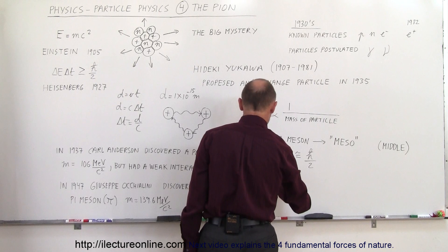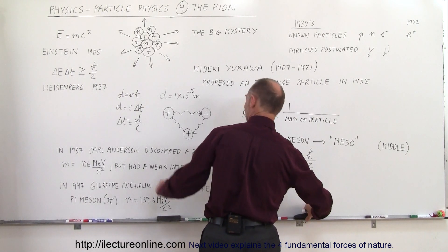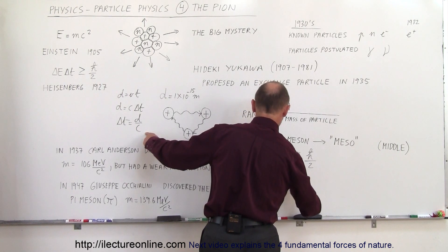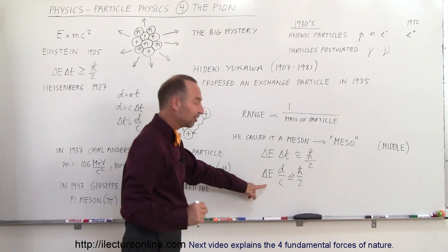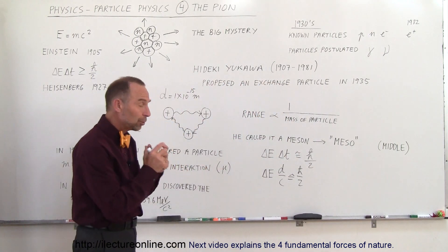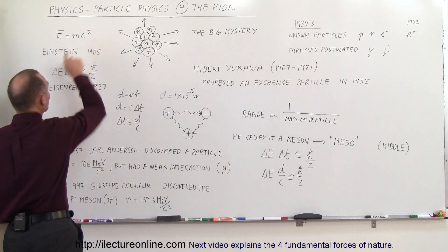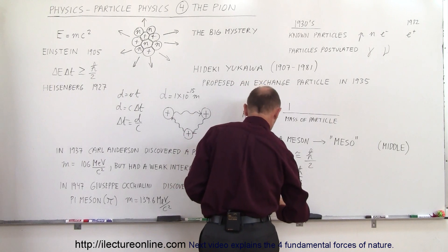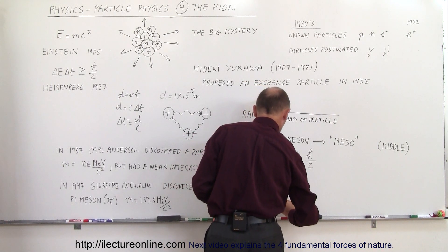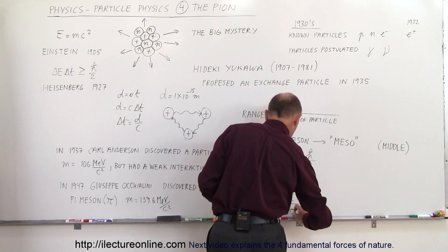If we then plug that in here, we then have the delta e is equal to, not equal to, I'm still multiplying at times, the distance it can travel divided by the speed of light, which would be approximately equal to h bar over 2. So if we now isolate the amount of energy that would be contained within the particle due to its mass, so again using this equation equals mc squared, we put the c there and the d down here, we can say that the energy therefore is equal to h bar times c divided by d times 2.